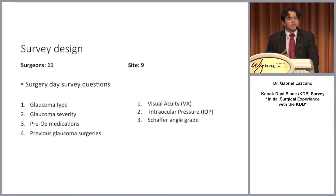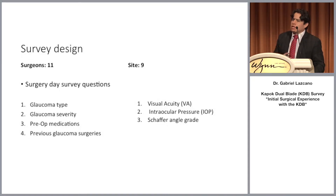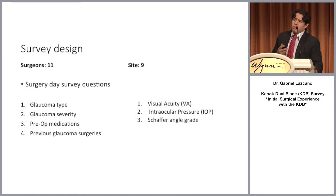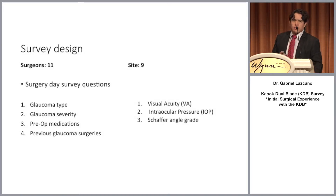We also have data related to the surgical technique, such as the corneal incision size used to introduce the KDB, the amount of trabecular meshwork removed, which quadrants were treated, and if we combined the surgery with FACO or with another mixed procedure. We also asked the surgeons some questions to evaluate the ease of use of this device.